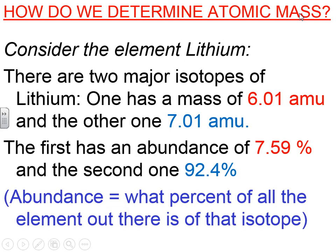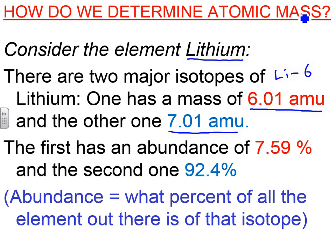So how do we determine the atomic mass? Let's consider another element, lithium, and show you the details of how the atomic mass is calculated. There are two major isotopes of lithium. Lithium-6 has a mass of 6.01 AMU, and lithium-7 has a mass of 7.01 AMU. The percent abundance of lithium-6 is 7.59%, meaning about 7.6% of all the lithium out there is lithium-6. Most of the lithium out there, about 92.4%, is lithium-7.